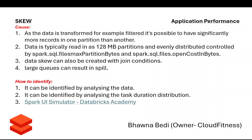In Spark, data is typically read as 128 MB partitions and evenly distributed. This is controlled by the Spark configurations `spark.sql.files.maxPartitionBytes` and `spark.sql.files.openCostInBytes`. Using these two settings you can control both the partitions and how evenly they are distributed.